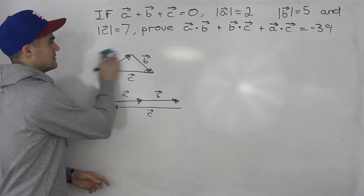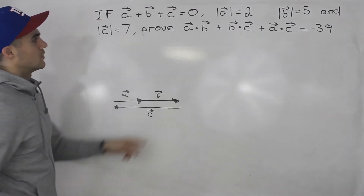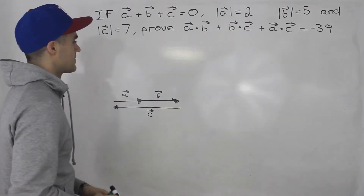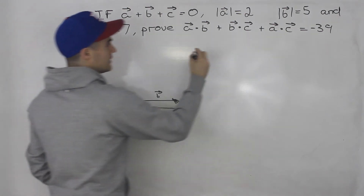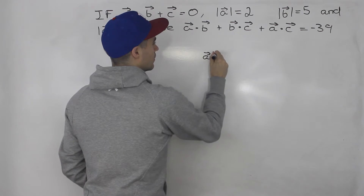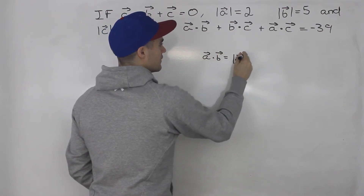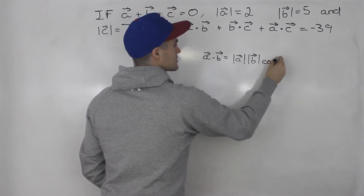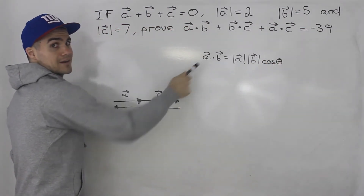Now let's get into figuring out what a dot b is, b dot c, and a dot c is. Let's start off with a dot b.